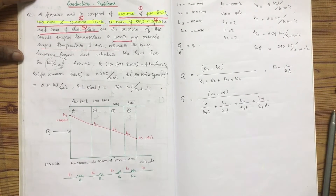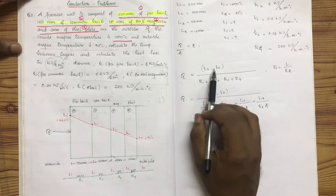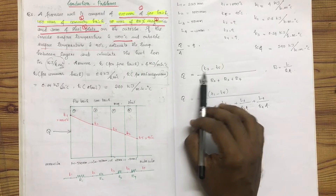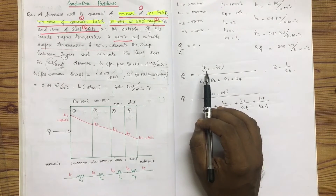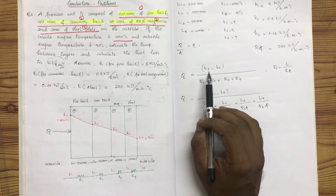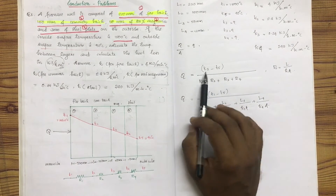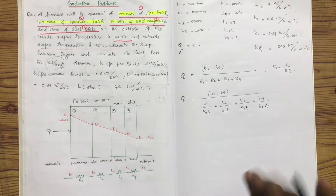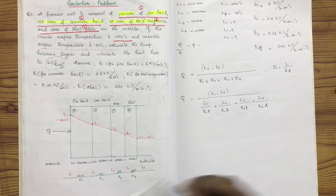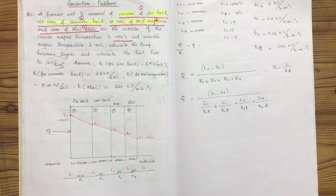If you have a problem with Kelvin, Kelvin gives the same value as Celsius for temperature differences. The temperature difference is the same in Kelvin and Celsius.